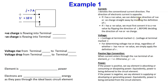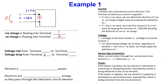The direction of negative charge is opposite. We can see that the conventional current is entering the terminal marked 1, therefore positive charge is flowing into terminal 1. The direction of the electronic current is opposite, and we can see that negative charge is flowing into terminal 2.